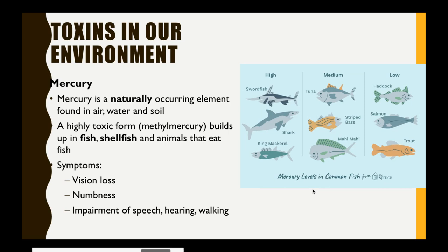The last toxin we're going to talk about is mercury. Mercury is a naturally occurring element found in air, water, and soil, and it's highly toxic when in a form called methylmercury. It's commonly taken up by fish, shellfish, and animals that eat those fish.